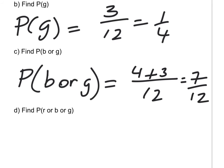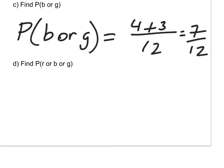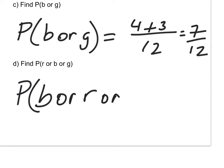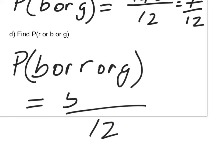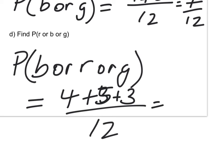Seven out of 12 is more than a half, so there's a good chance of picking blue or green. Now the probability of blue or red or green: again 12 possible outcomes. If I pick any marble it must be blue, red, or green — I can't fail. So the probability is 12 out of 12, which equals one. This confirms what we said earlier: all probabilities of possible outcomes add to one.